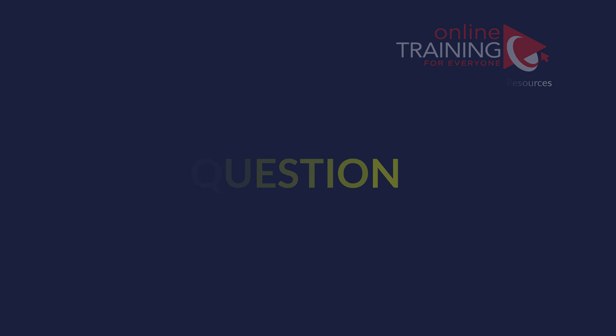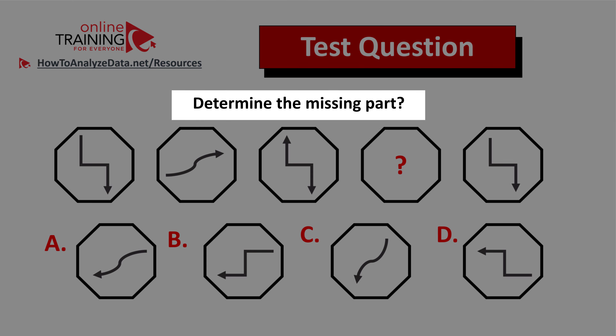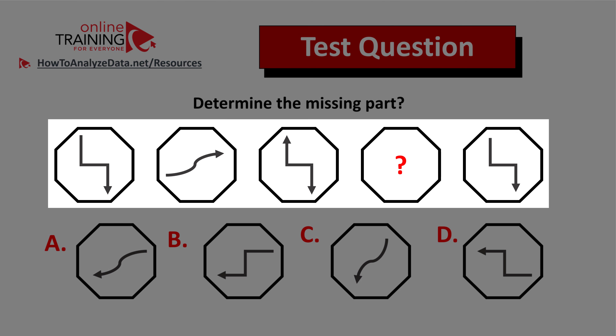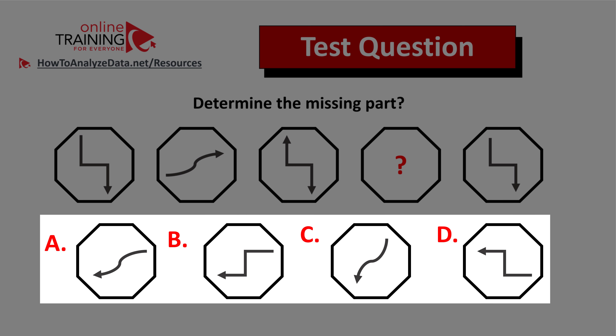Let's look at an interesting question you might frequently see on the test. Determine the missing part. You're presented with five hexagons that contain different types of arrows inside, and one arrow is missing. You have four different choices presented at the bottom of the screen: Choice A, B, C, and D.